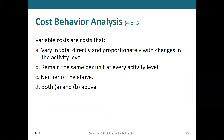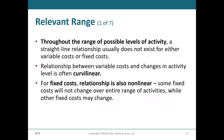Which one refers to variable costs? A — they vary in total directly and proportionately with changes in the activity level. B — they remain the same per unit at every activity level. C — neither of the above. D — both A and B. If you think about it, both A and B are saying the same thing essentially: costs remain the same per unit at every activity level and they vary directly and proportionately with changes in the activity level. The answer is D — both A and B.